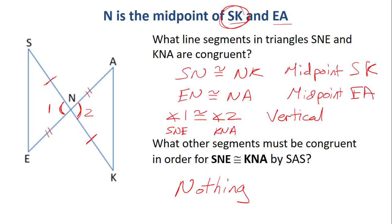Because of the word 'and', this is actually two sentences. N is the midpoint of SK and N is the midpoint of EN. So each sentence gives us one thing still. It's just that it's compound. So there are two givens in the one sentence.